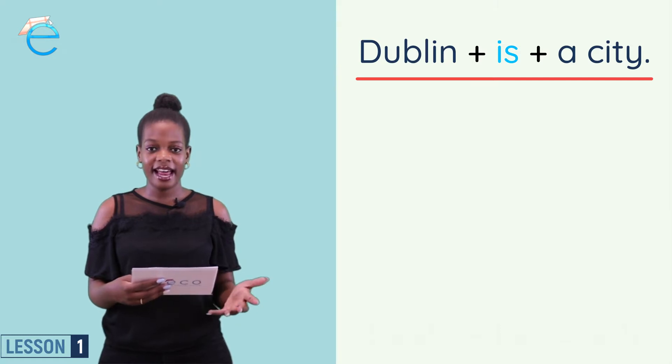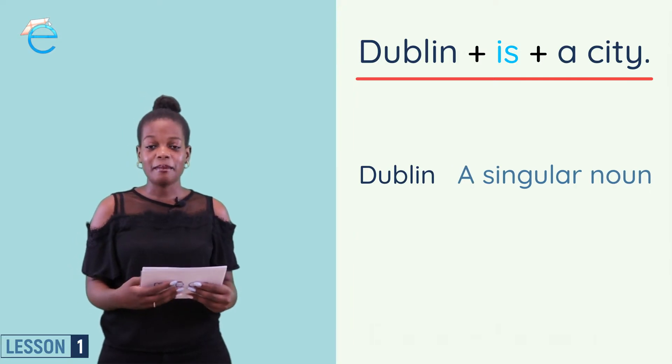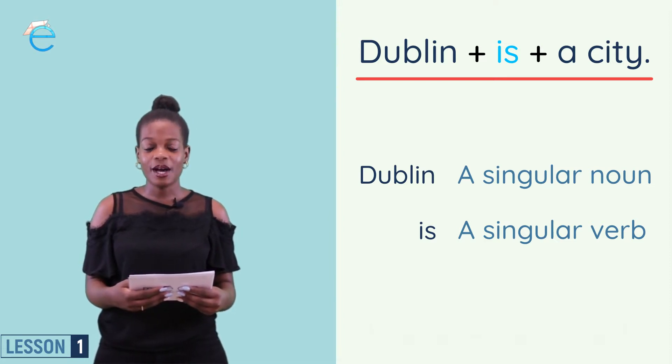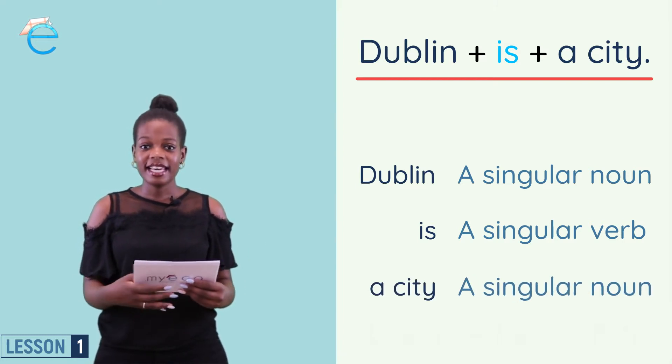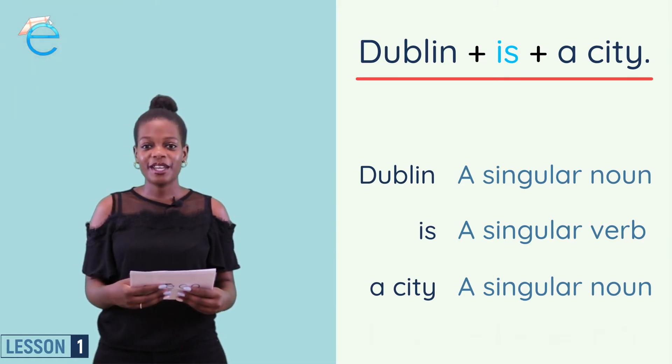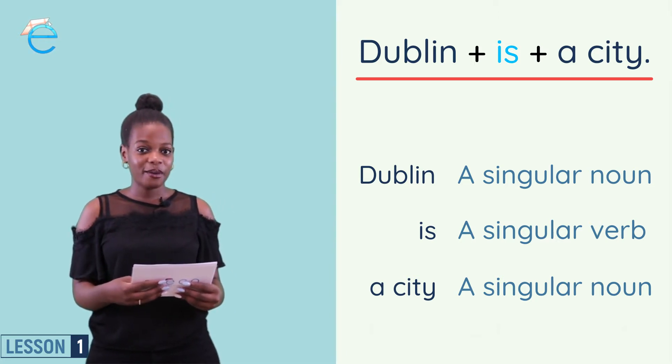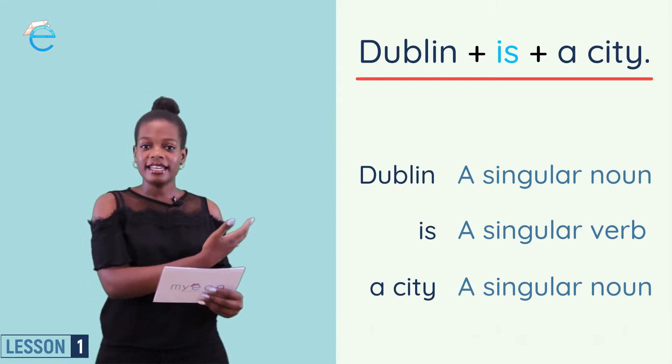The first example we have here is Dublin is a city. Now, let's look at everything together. The first word I have is Dublin. Dublin is the name of a city and it is a singular noun. Next, I have is. Is is from my be verb: am, is, are. We use is in singular situations. After is, I have a city. City is my next singular noun, and here I use a to show it is one city. So my structure is noun plus is plus noun. Noun Dublin, is my be verb, and noun a city.